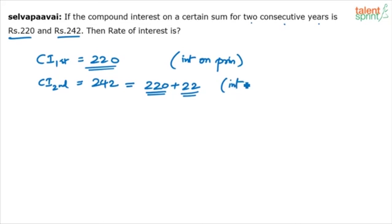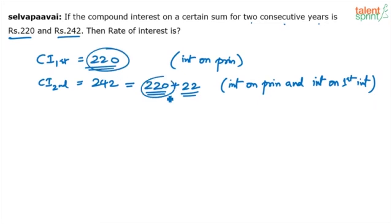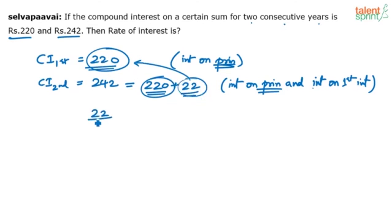In the first year you get interest on principal. In the second year you get interest on principal plus interest on the first year's interest. So the interest on principal is 220 in both years — because the principal amount is not changing. What we get additionally in the second year is the interest on the interest, which is ₹22. So 22 out of 220 is 10%. Therefore, the rate of interest is 10%.